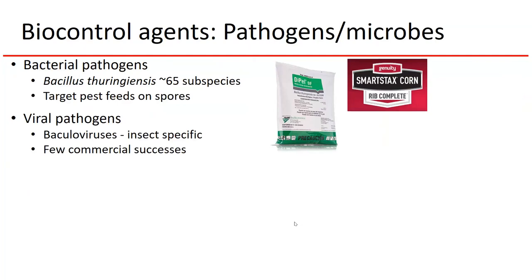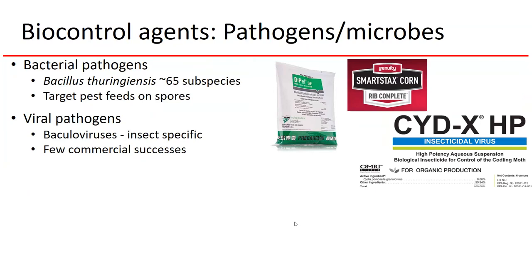The next example are viral pathogens, which tend to all be baculoviruses. This entire group is insect-specific, so there's no chance of these viruses ever infecting humans. They're very effective, but there are few commercial successes because viral pathogens tend to be too species-specific. With bacterial BT you might kill a broad range of caterpillars, but with viral pathogens it tends to target only a single species. That species has to be of very high economic concern and have few cheaper chemical alternatives to be commercially viable. One commercial success is a baculovirus targeting codling moths in organic apples.